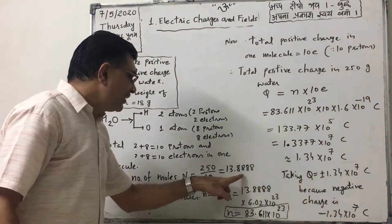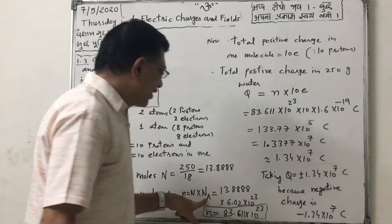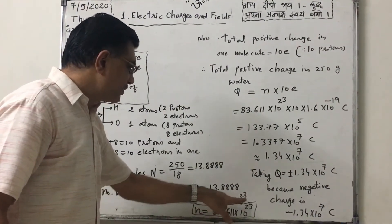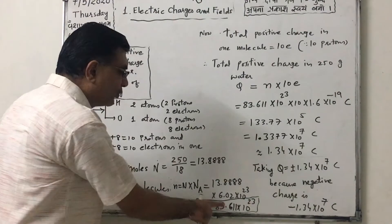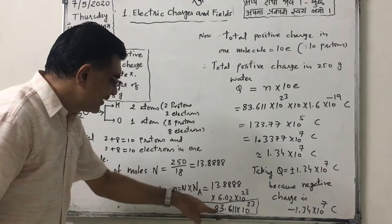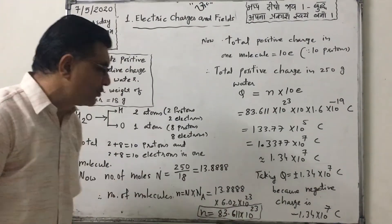Now if we multiply number of moles by Avogadro number, that is 6.02 into 10 raise to 23, we get total number of molecules. So this product is 83.611 into 10 raise to 23.